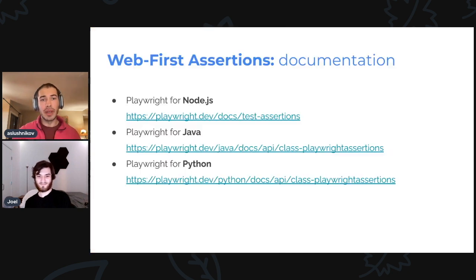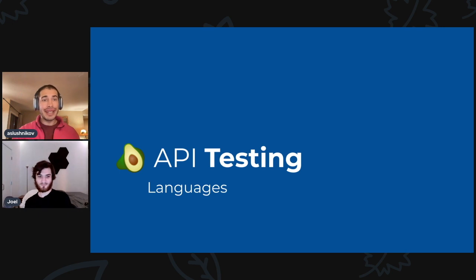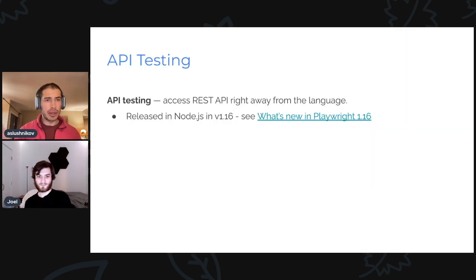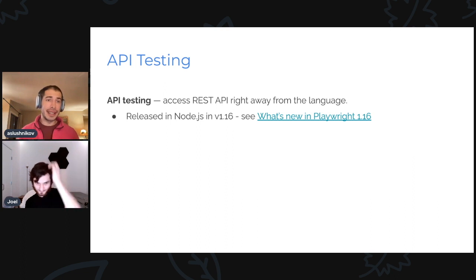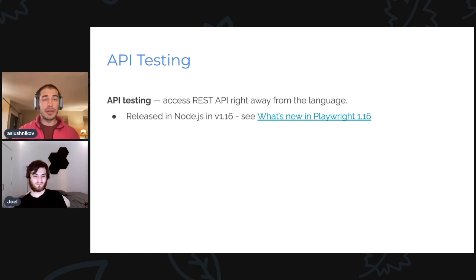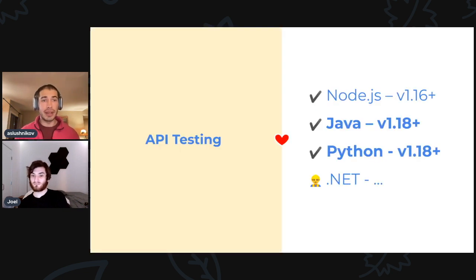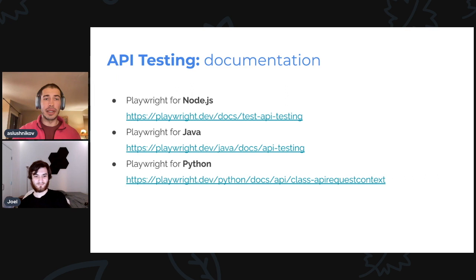Next feature is API testing. You remember what API testing is? It's like fetch, right? We're getting URLs and seeing what comes out of them. Exactly — not fetch, but much more cool. We had a video about it in what's new in Playwright 1.16. It is basically a way to access and assess your REST API from inside the language you use to write your tests. Similarly to web-first assertions, this was a very successful experiment for us, so now we bring it to Java and Python as well — and .NET is coming.